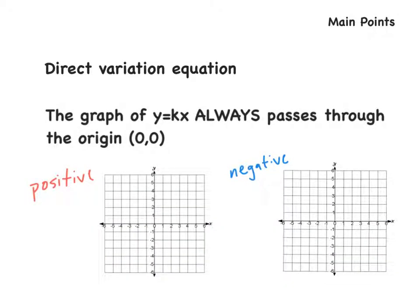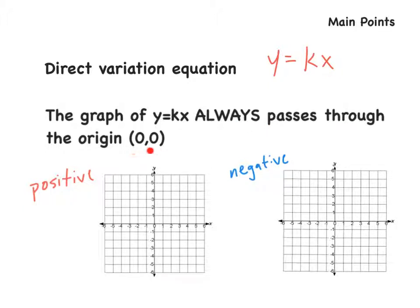So there are a couple of main points. The direct variation equation is very important: y equals k times x. k is our constant of variation, x is any point on the x-axis, y is a particular point on the y-axis. The graph of y equals kx always passes through the origin of (0, 0).